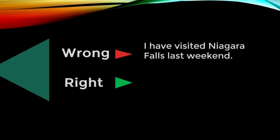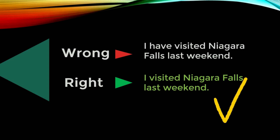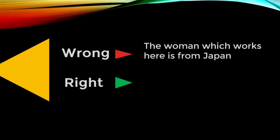'I have visited Niagara Falls last weekend' — that's the wrong one. The right one is: 'I visited Niagara Falls last weekend.' Next: 'The woman which works here is from Japan.' The correct form is: 'The woman who works here is from Japan' — not 'which,' because we're talking about a person.